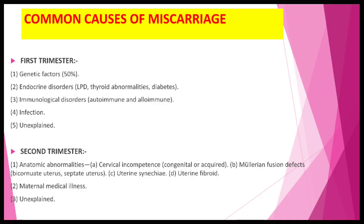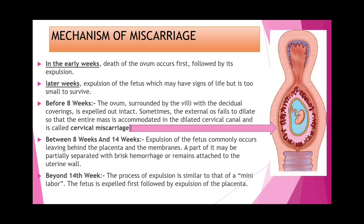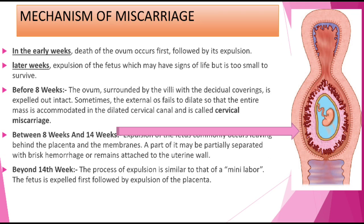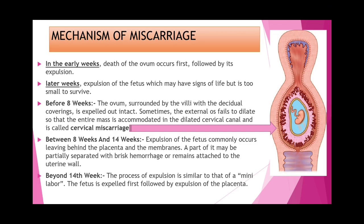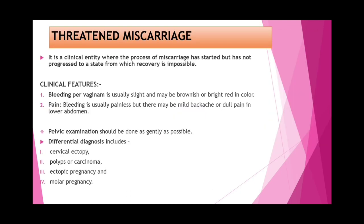In early weeks, death of the ovum occurs first followed by its expulsion. In later weeks, expulsion of the fetus may show signs of life but it is too small to survive. Before 8 weeks the ovum is surrounded by villi with a residual covering and expelled intact. Sometimes the external os fails to dilate so the entire mass is accommodated in the dilated cervical canal — this is called cervical miscarriage.